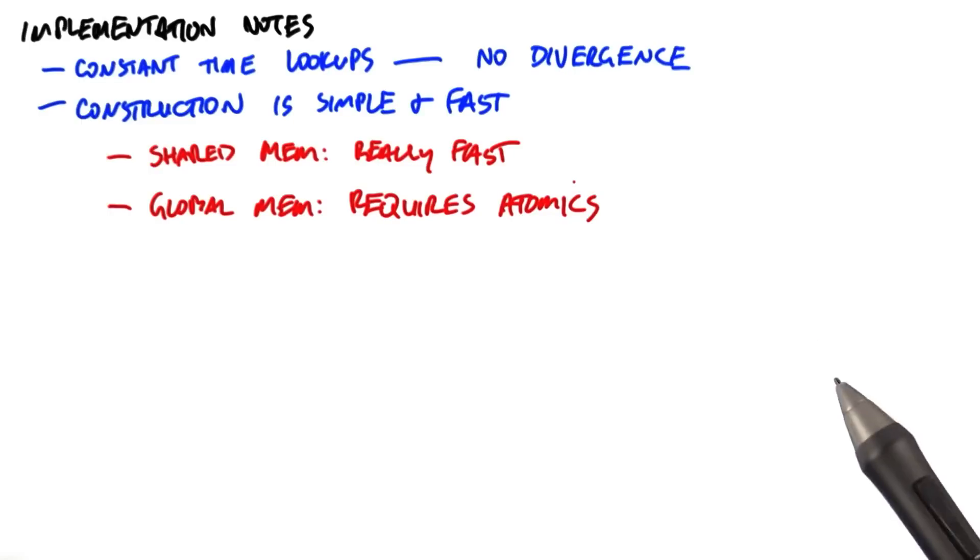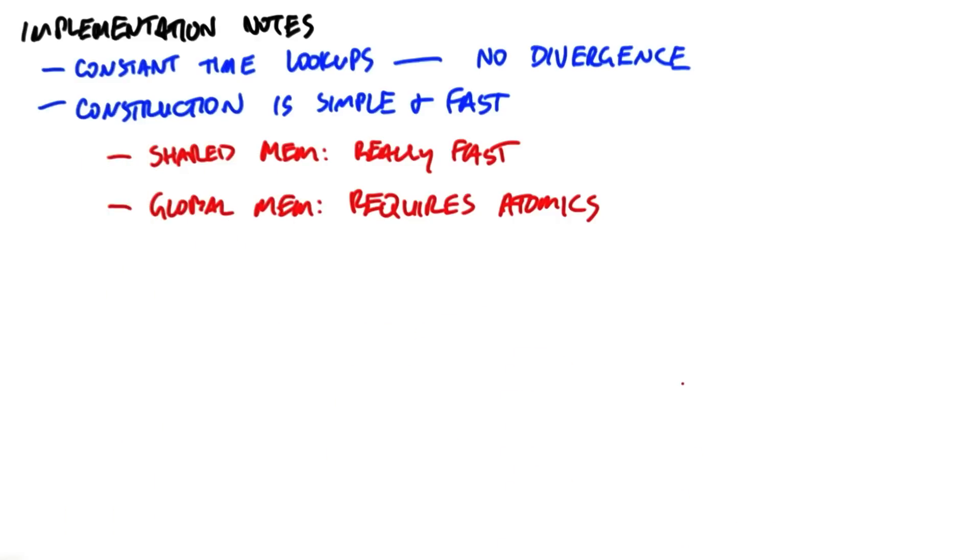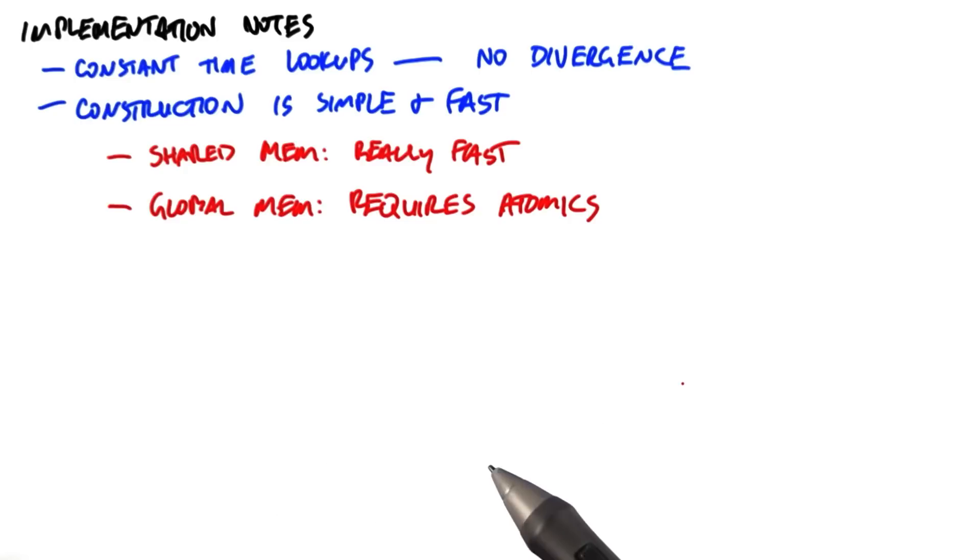So a few notes on implementation. The real benefits of this particular formulation of hashing are that our lookups are constant time, and that's terrific for parallelism for a machine like the GPU because we keep all of our threads busy. There's no thread divergence at all.